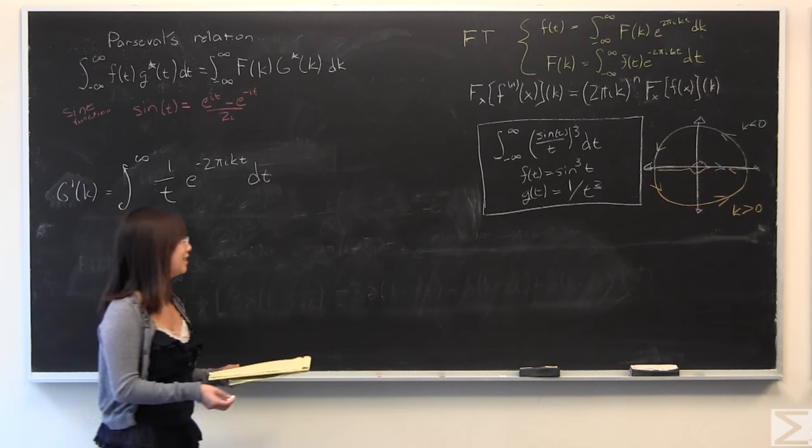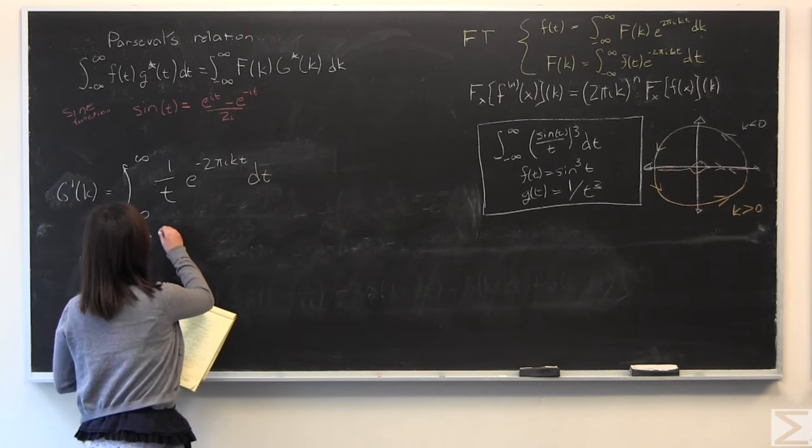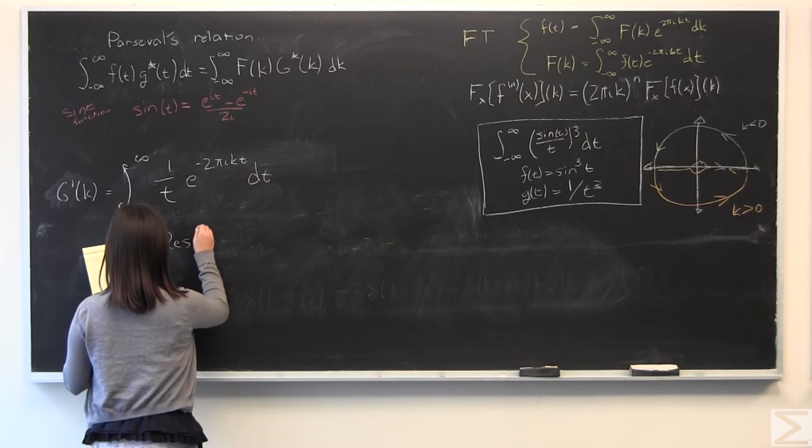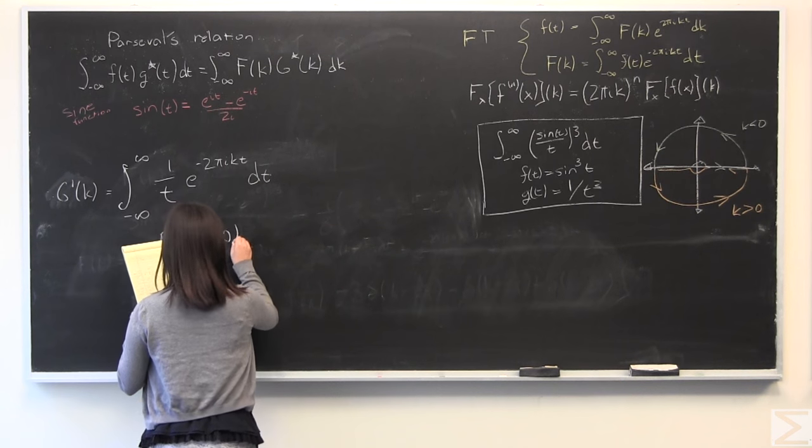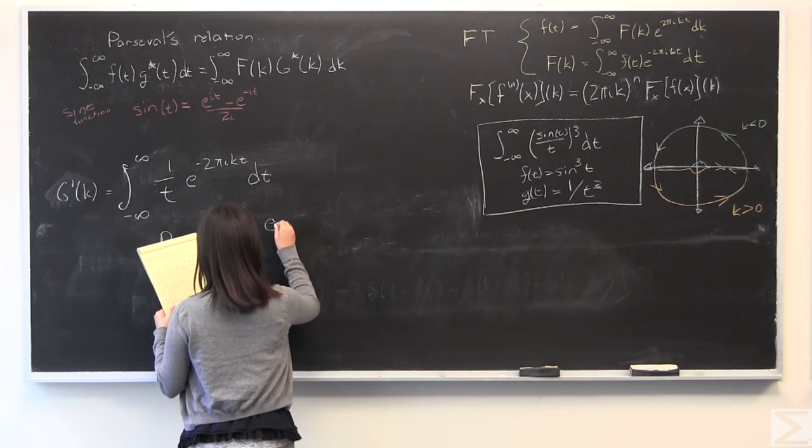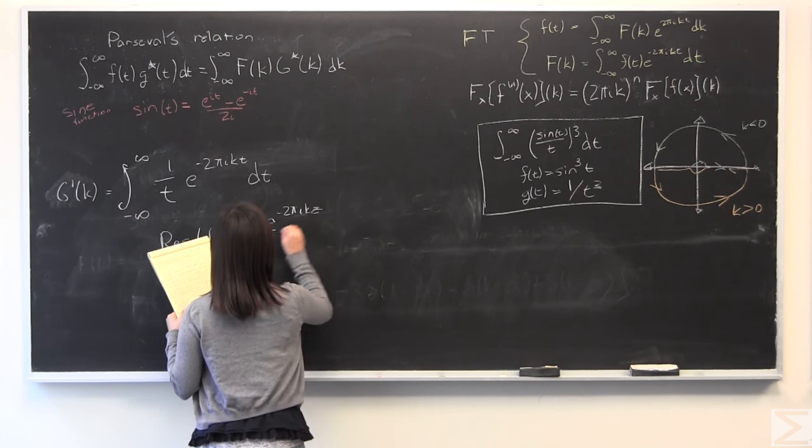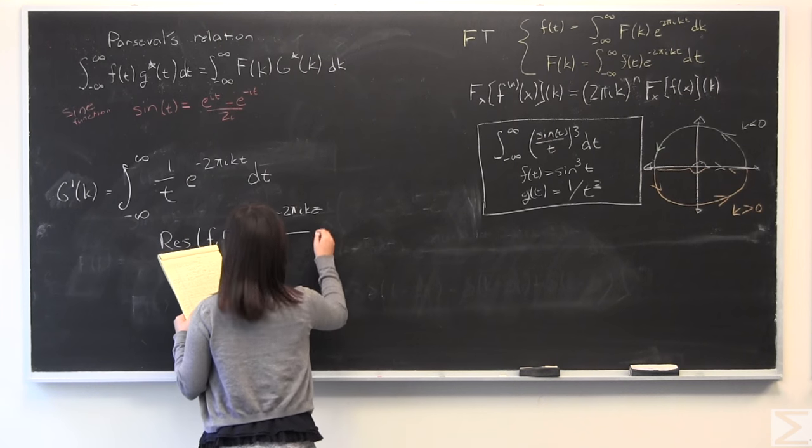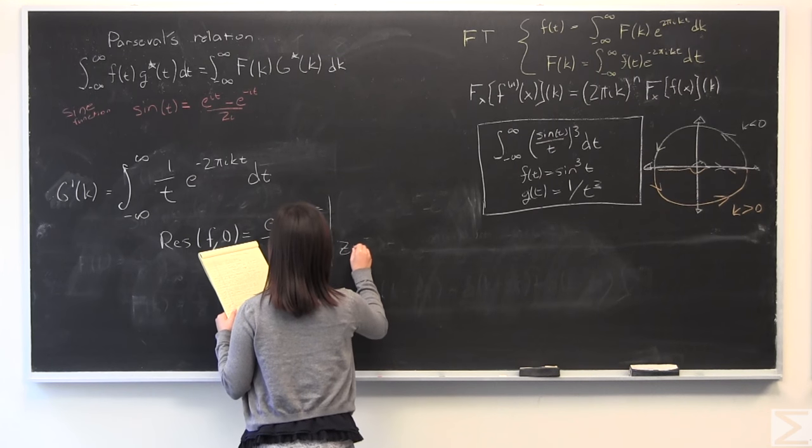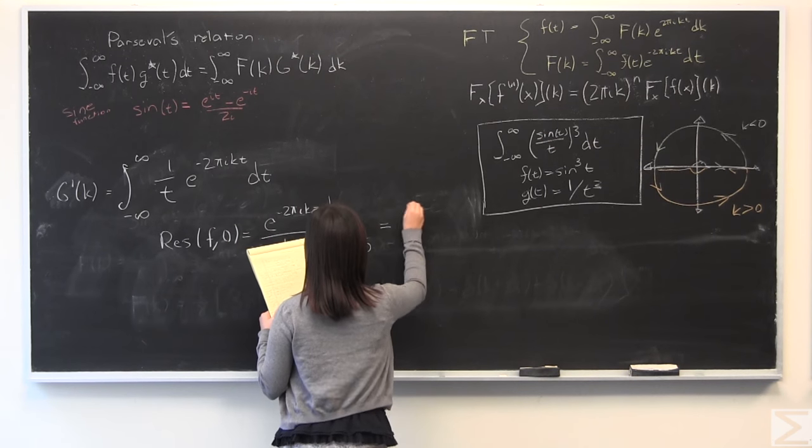We can use that, it's a very, very easy one to evaluate, I'll write it down anyway. So we look at the equation, we plug in to the top, derivative to the bottom, we evaluate this at z as equal to 0, and we very simply get 1.